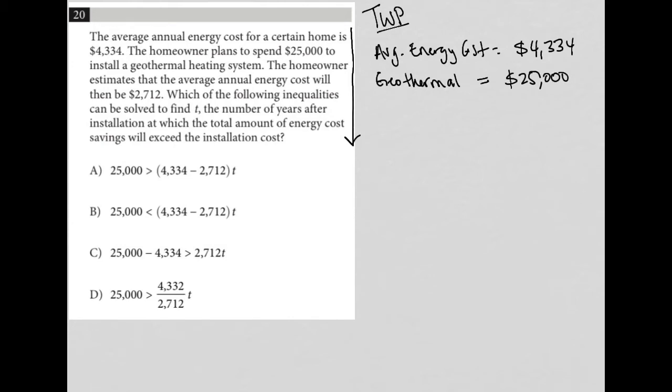Next sentence says the homeowner estimates that the average annual energy cost will then be $2,712. So I'm going to go back and say this is the old average energy cost and then the new average energy cost right after you spend the money on the geothermal system. That cost will go down to $2,712, which of the following inequalities can be solved to find T the number of years after installation at which the total amount of energy cost savings will exceed the installation cost.